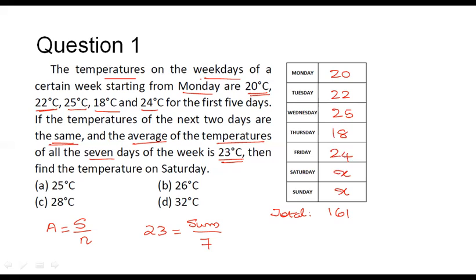Adding all values together: 20 + 22 + 25 + 18 + 24 + x + x = 161. The sum of the weekday temperatures, 20 + 22 + 25 + 18 + 24, comes to 109. And x + x equals 2x. So: 109 + 2x = 161.